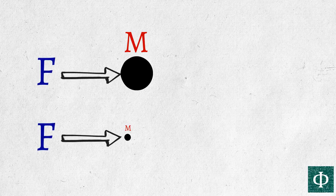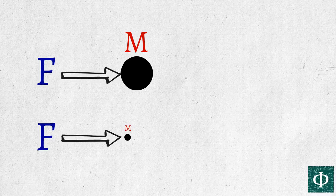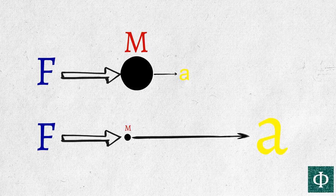By pushing the two objects, we apply a force onto them, which in turn causes them to accelerate. If the two objects have a different mass, they will accelerate at different rates.